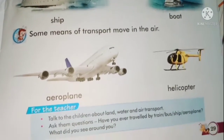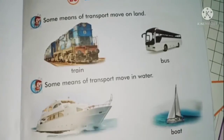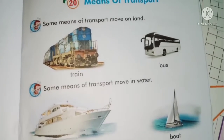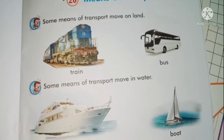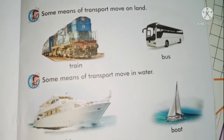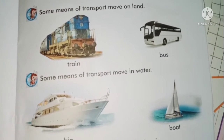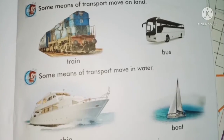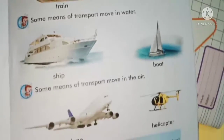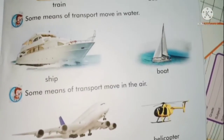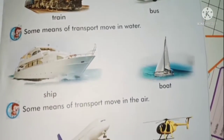So dear kids, what are land transports? Train, bus, car, auto rickshaw, bicycle. And what are water transports? Ship, boat, submarine. And air transports are aeroplane and helicopter.